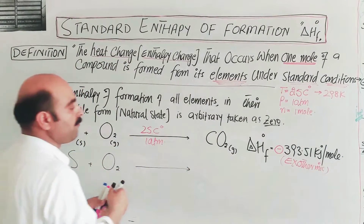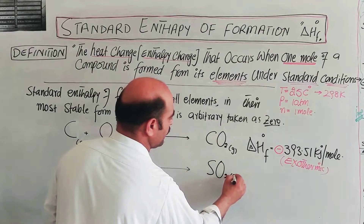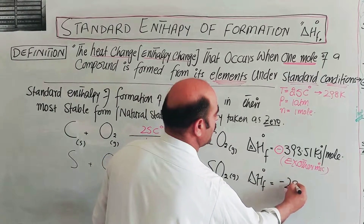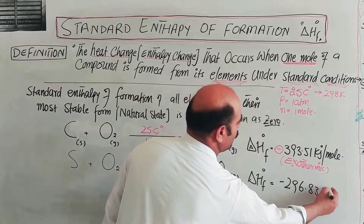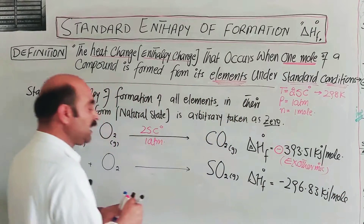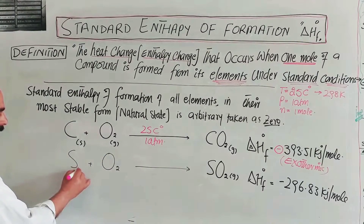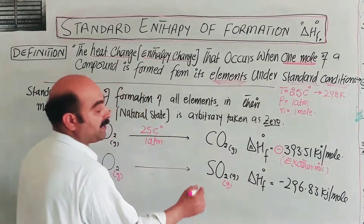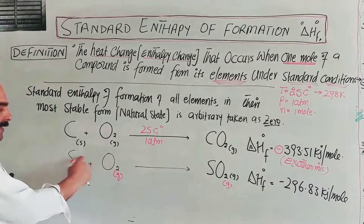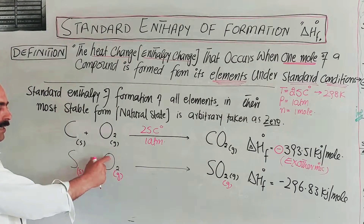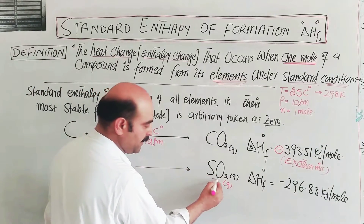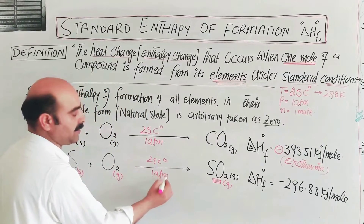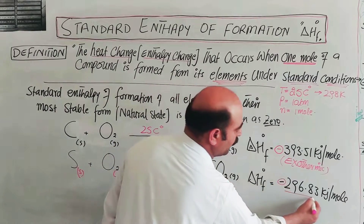Now, if we consider the formation of sulfur dioxide gas under standard conditions, the standard enthalpy of formation, delta H degree F, is equal to minus 296.83 kJ per mole. The condition is standard. For solid sulfur, the most stable state is the rhombic form. This means that from the elements in their natural, most stable state, one mole of sulfur dioxide gas is formed under standard conditions.